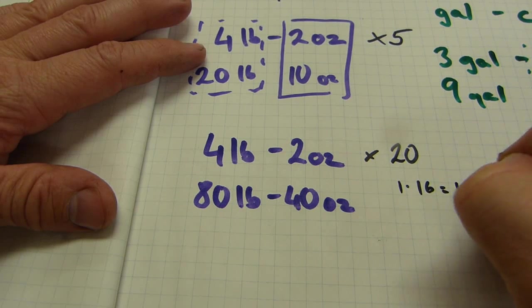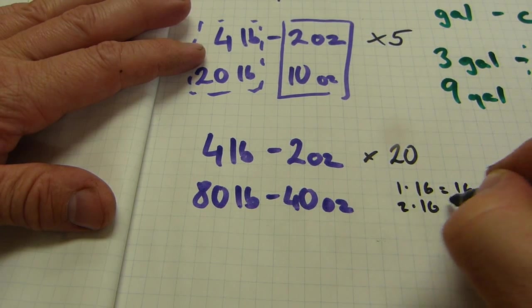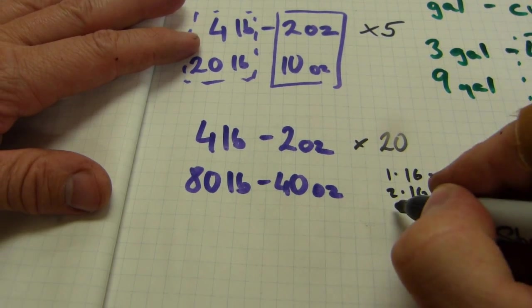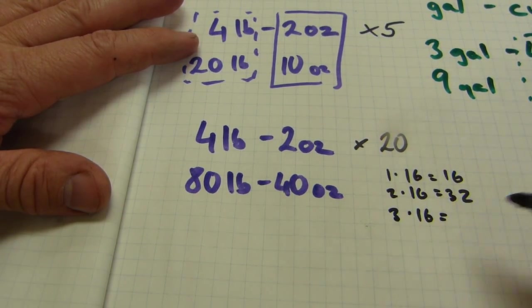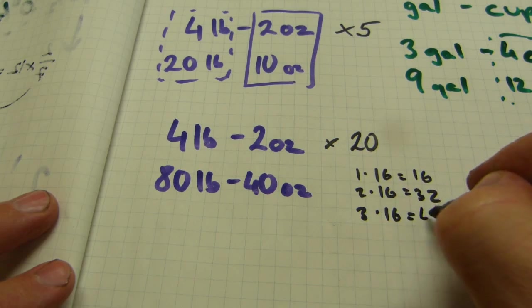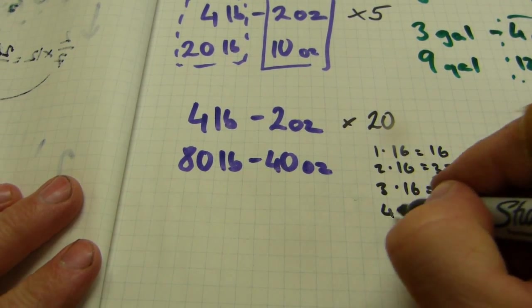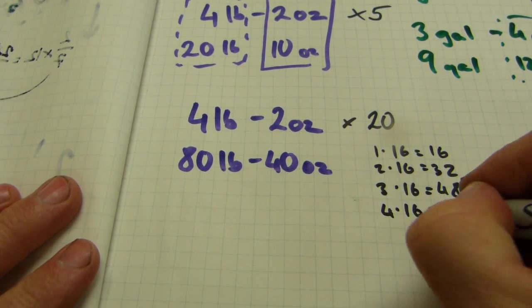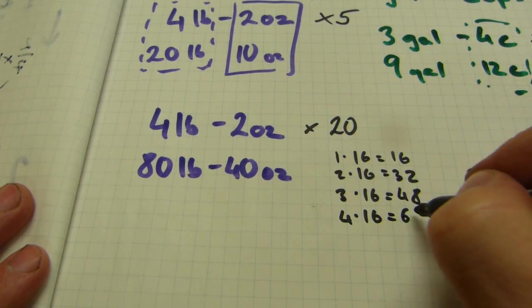So let me just write up here some multiples of sixteen. One by sixteen is sixteen. Two by sixteen is thirty-two. Three by sixteen is forty-eight. And four by sixteen equals sixty-four.